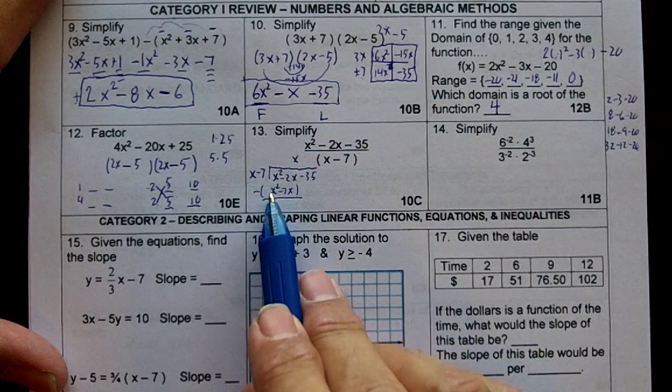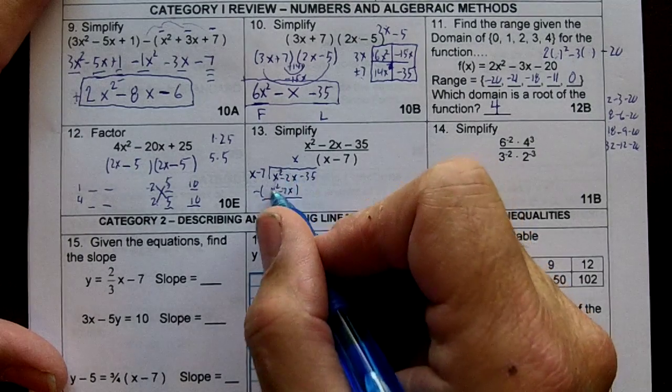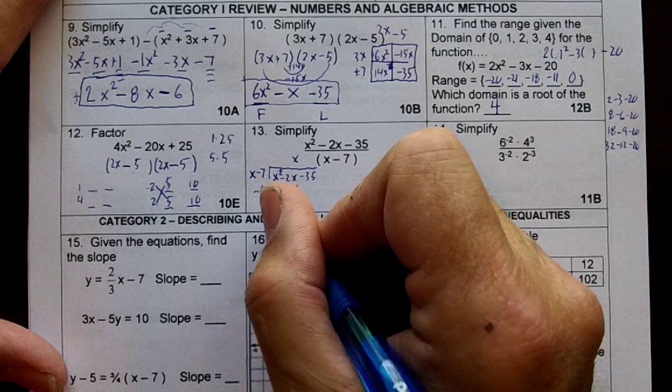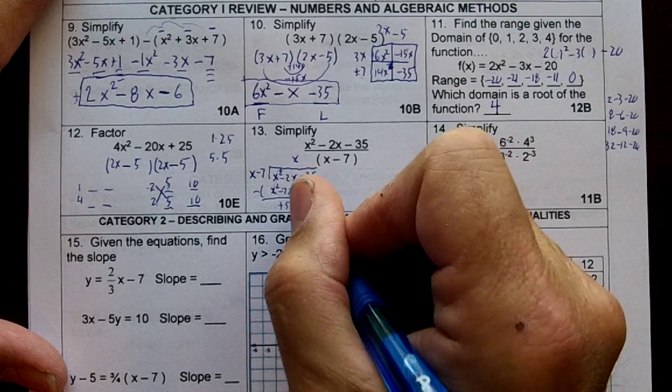x squared minus x squared is zero. It cancels out. Negative 2x minus a negative 7x is plus 5x. Then drop your minus 35.